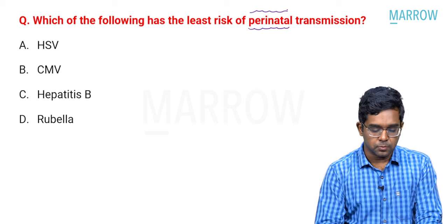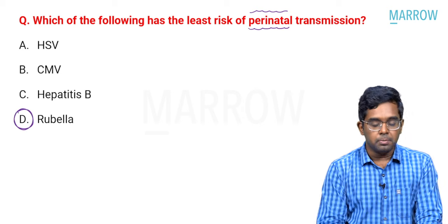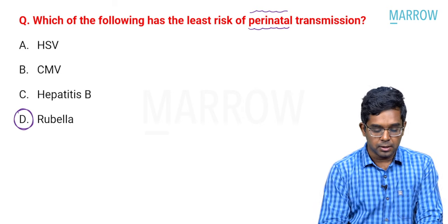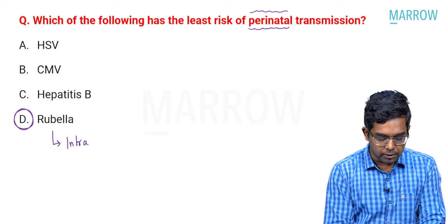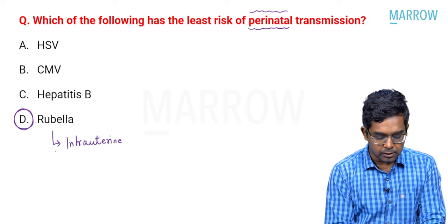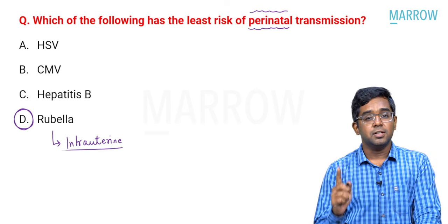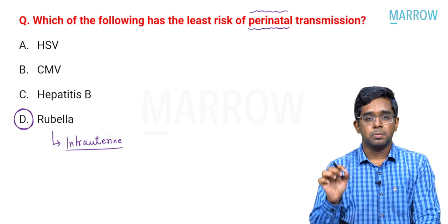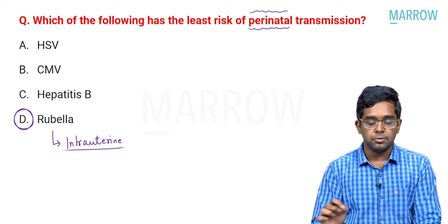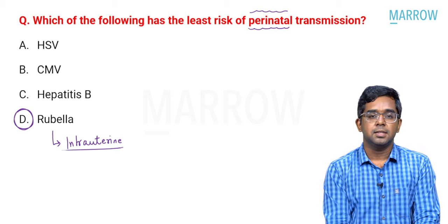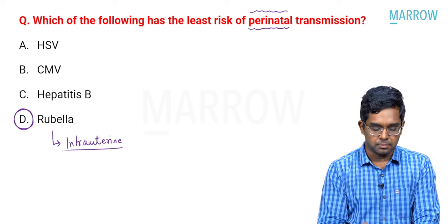Hepatitis B definitely has perinatal transmission risk — that is why we prevent it by giving hepatitis B vaccine as well as hepatitis B immunoglobulin as soon as possible after birth. The answer for this question is rubella. Rubella does not have perinatal transmission — it is more of intrauterine transmission, and the risk is highest in the first trimester of pregnancy.